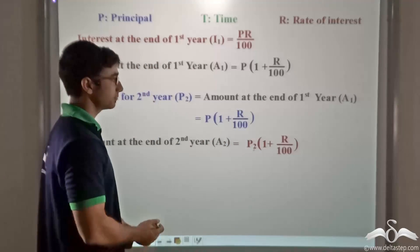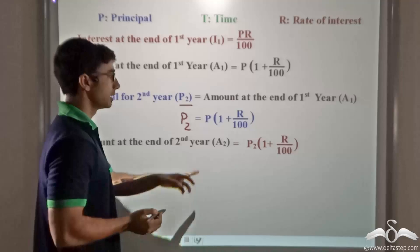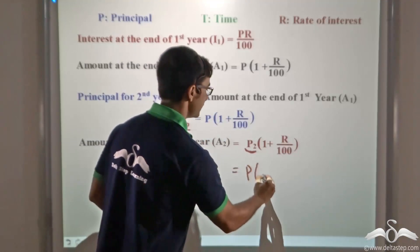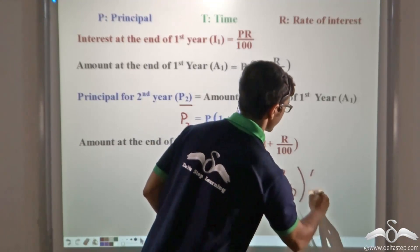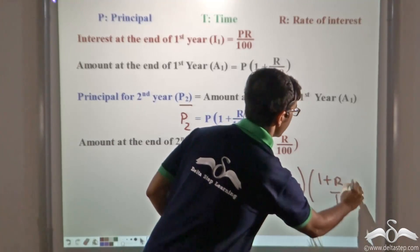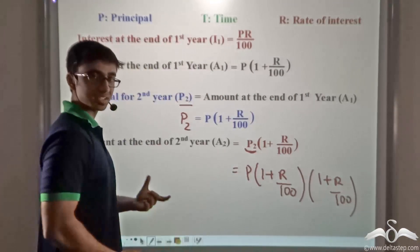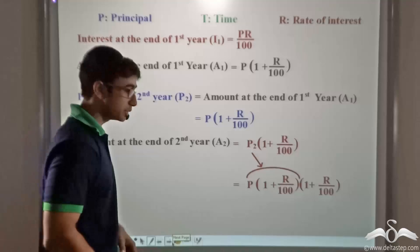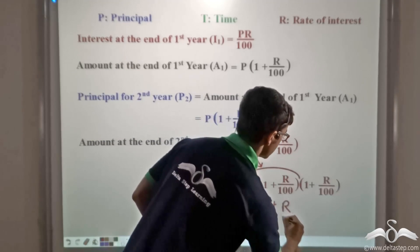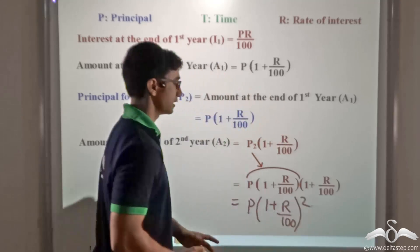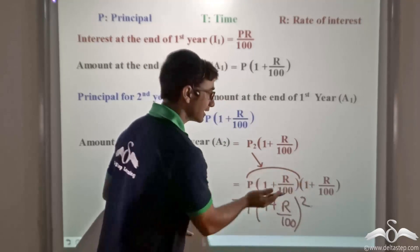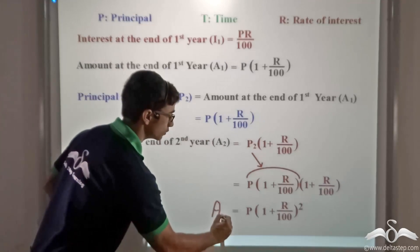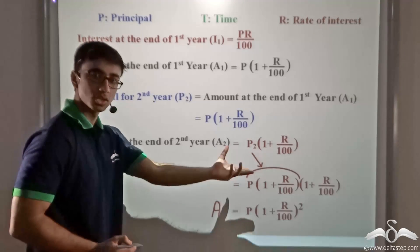From the previous equation, P2 equals P into 1 plus R divided by 100. Replacing P2 with this value, I find that A2 equals P into 1 plus R divided by 100, into 1 plus R divided by 100. This gives me P into 1 plus R divided by 100, whole squared — because there are two occurrences of this term being multiplied. So A2 equals P into 1 plus R divided by 100, whole square.